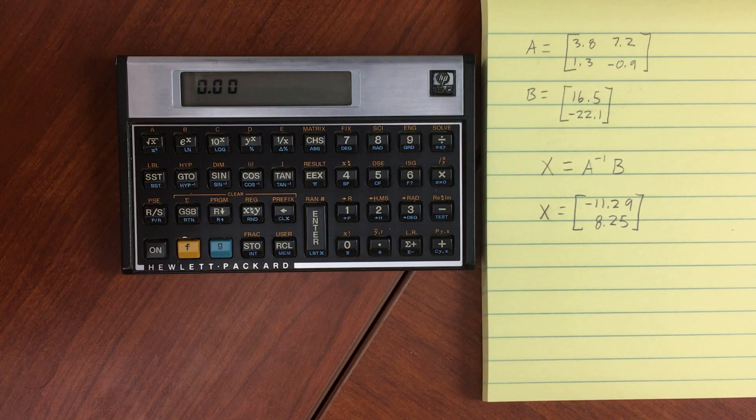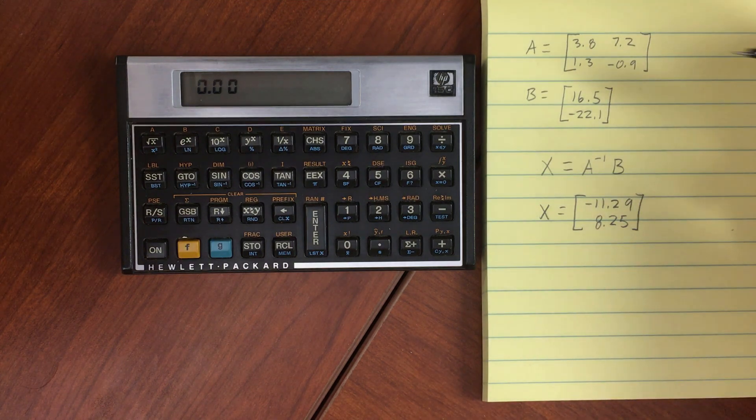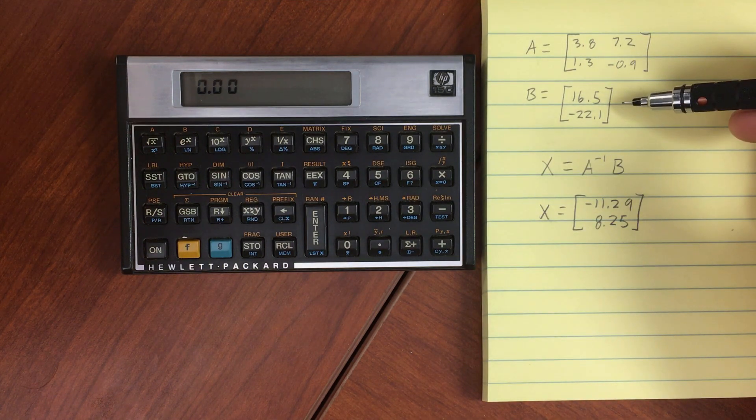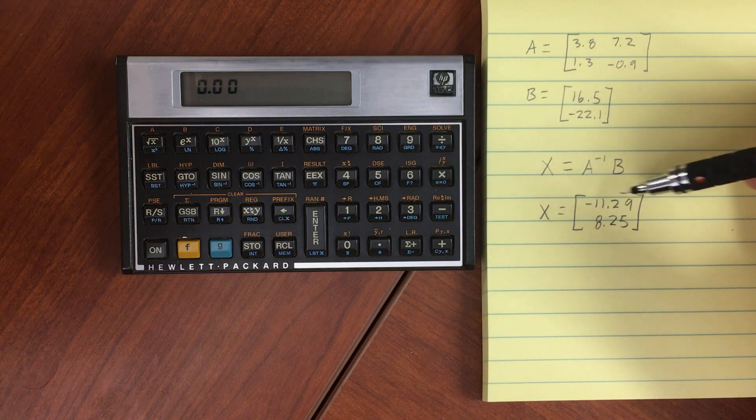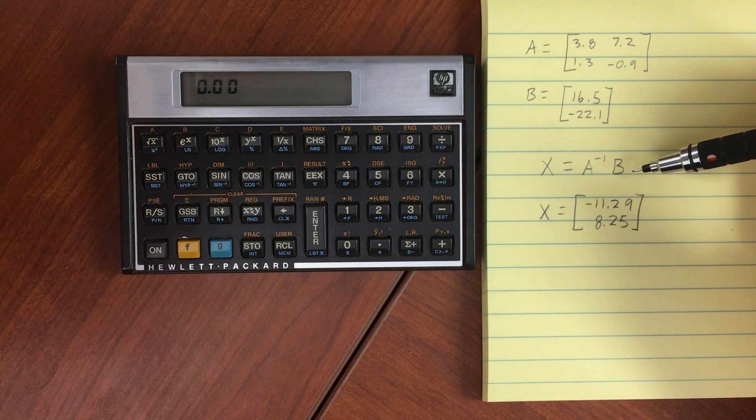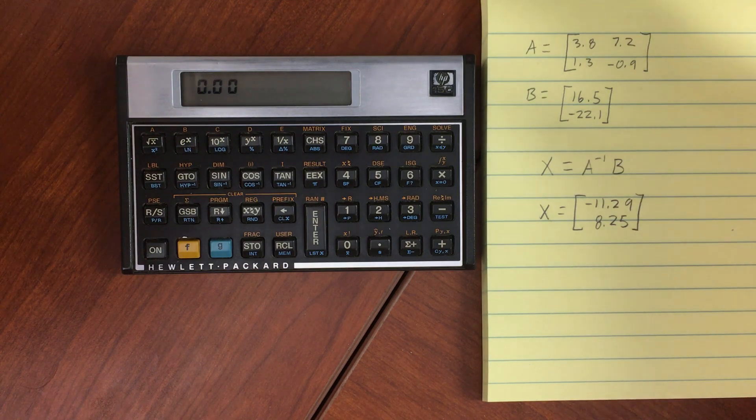Now something else we can do with the 15C is matrices. So I've got a 2 by 2 matrix here, a 2 by 1 matrix, and we're going to perform this operation, which to the 15C is essentially the same as B divided by matrix A.